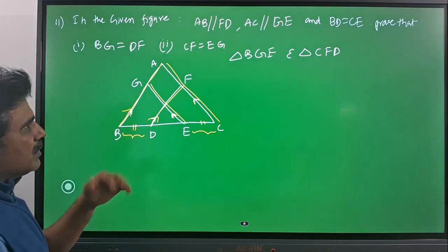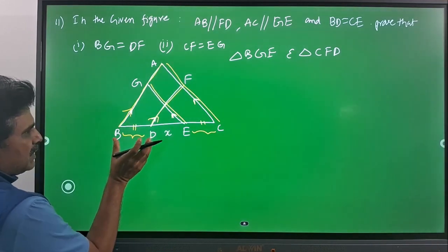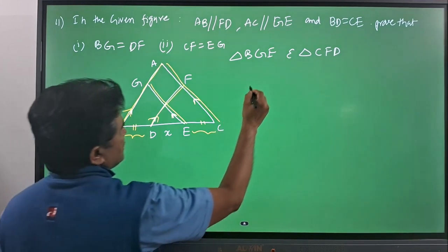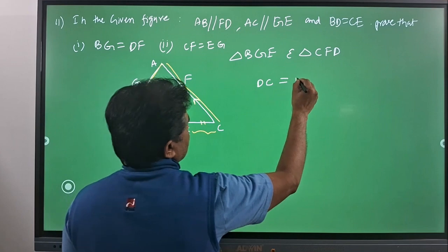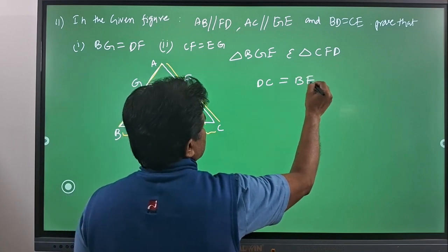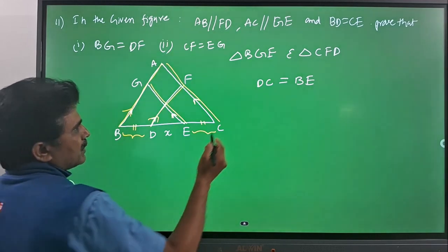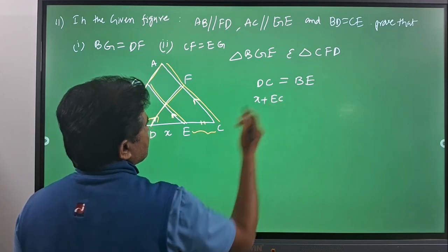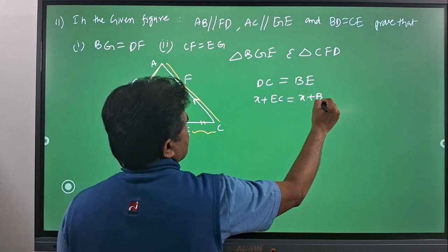From that, we need to prove whether they are congruent or not. I am specifying DE as X because that length seems to be common for those two triangles. I will consider DC and BE. DC can be written as X plus EC, and BE can be written as X plus BD.